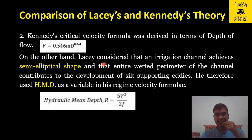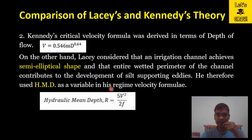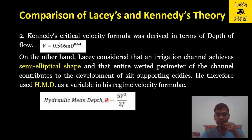On the other hand, Lacey considered that an irrigation channel achieves a semi-elliptical shape and that the entire wetted perimeter contributes to the development of silt-supporting eddies. He therefore used hydraulic mean depth (HMD) as a variable in his regime velocity formula: R = 5V² / 2f. So in Lacey's formula, velocity is expressed in terms of hydraulic mean depth R, while in Kennedy's it is in terms of depth of flow D only.